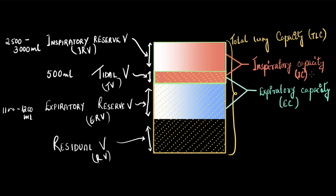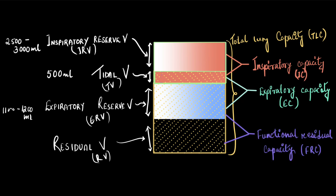Similarly, the maximum Ravi can exhale is tidal volume plus expiratory reserve volume, and together these are called expiratory capacity. If Ravi is only breathing the tidal volume, the air that remains undisturbed in the lungs — expiratory reserve volume plus residual volume — is together known as functional residual capacity (FRC). This brings us to the end of lung volumes and capacities.